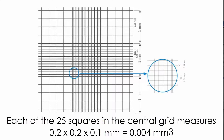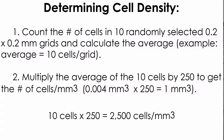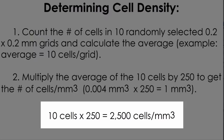Each one of these grids is 0.2 millimeters in width and 0.2 millimeters in length. You count the number of cells in 10 randomly selected 0.2 millimeter grids and calculate the average — for example, an average of 10 cells per grid. If you multiply the average 10 cells by 250, you get the number of cells per cubic millimeter. That is 0.004 millimeters cubed times 250 equals 1 cubic millimeter — so 10 cells times 250 equals 2,500 cells per cubic millimeter.